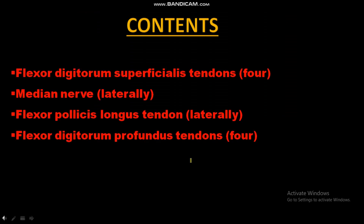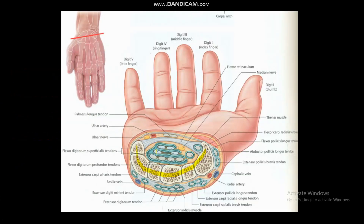Now the contents of the carpal tunnel — meaning those structures which are passing through the carpal tunnel. The contents are: flexor digitorum superficialis tendons, which are four in number; the median nerve, which is located laterally; flexor digitorum profundus tendons, which are also four in number. These four are flexor digitorum superficialis tendons, and these four are flexor digitorum profundus tendons. There is also the tendon of flexor pollicis longus. And here, shown in yellow, is the median nerve. All these structures are passing through the carpal tunnel — these are the contents of the carpal tunnel.